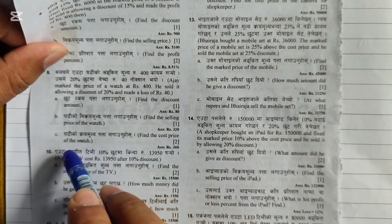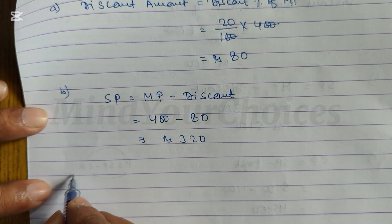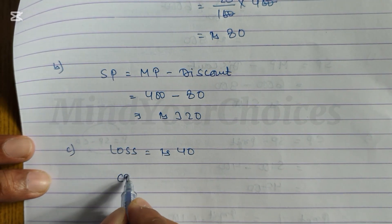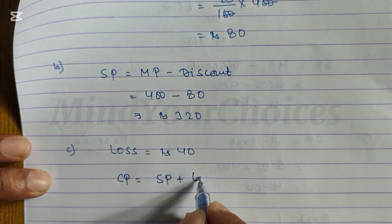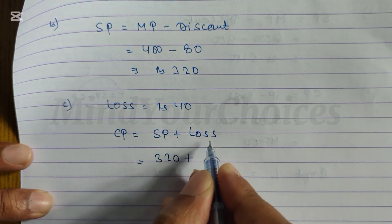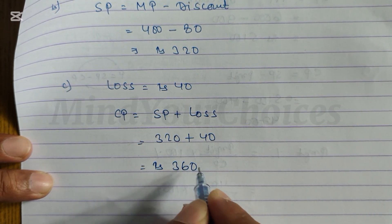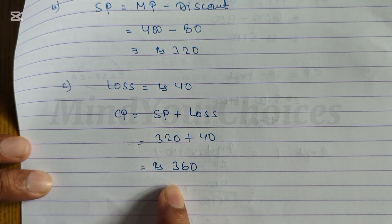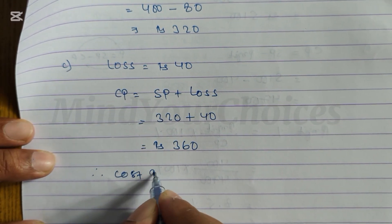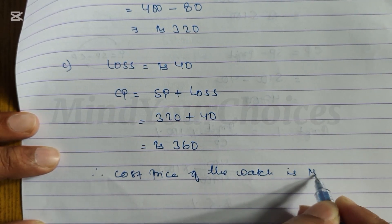Part C: Find the cost price of the watch. Loss is equal to Rs 40, and SP is equal to Rs 320. Using the loss formula — Loss equals CP minus SP — we get CP equals SP plus Loss, which is 320 plus 40. So the cost price of the watch is Rs 360.